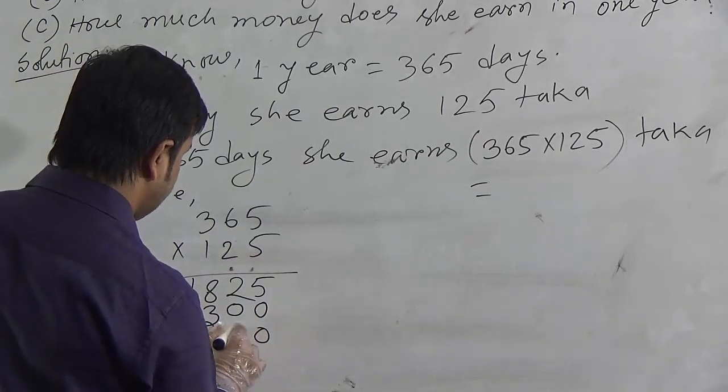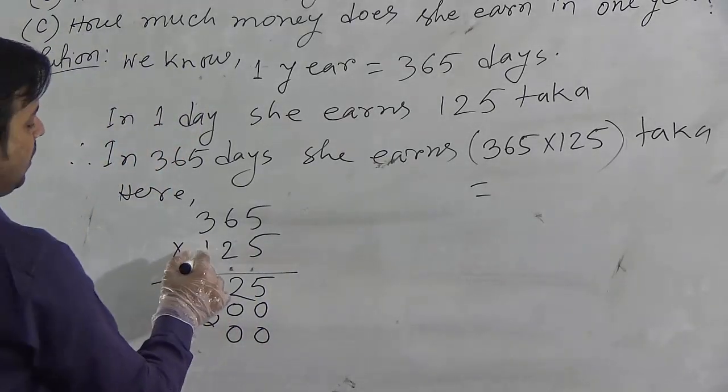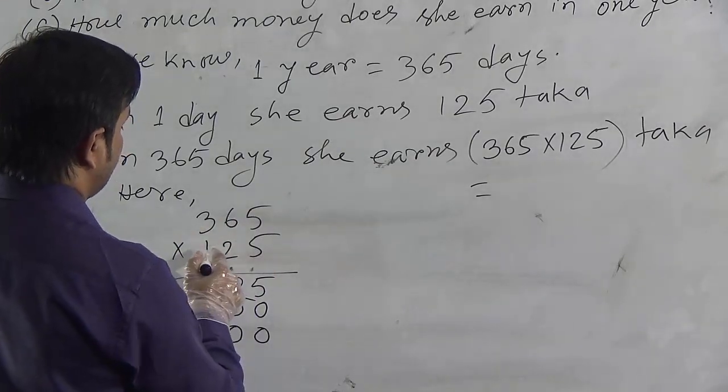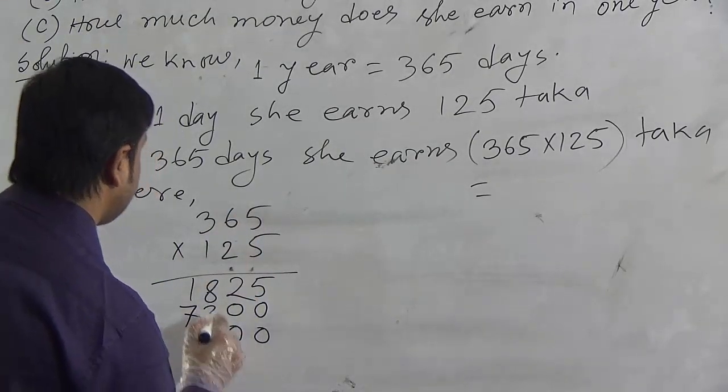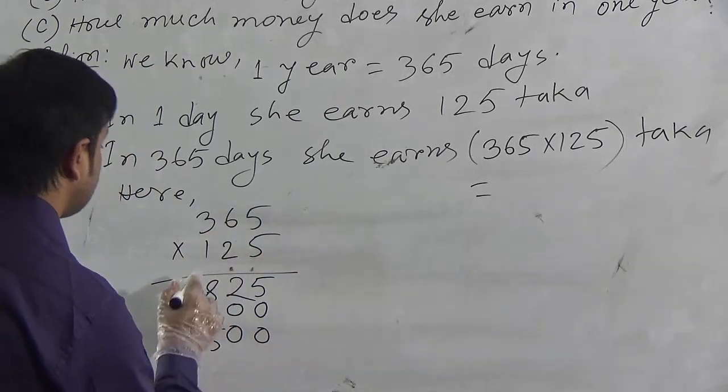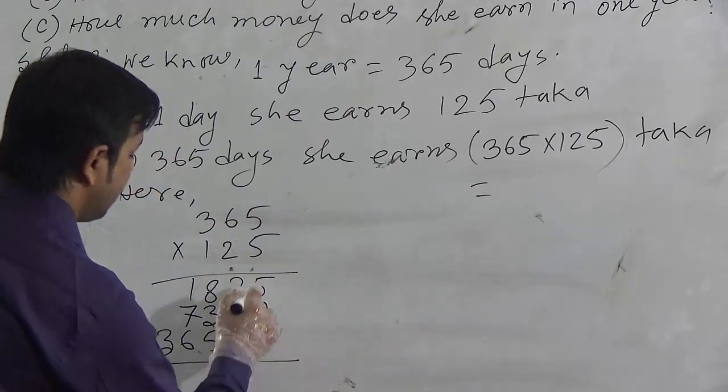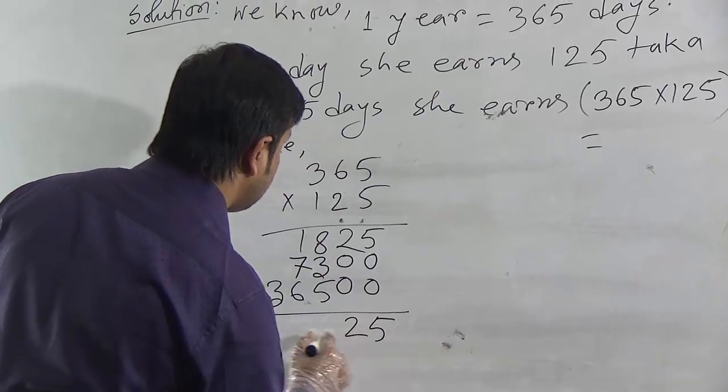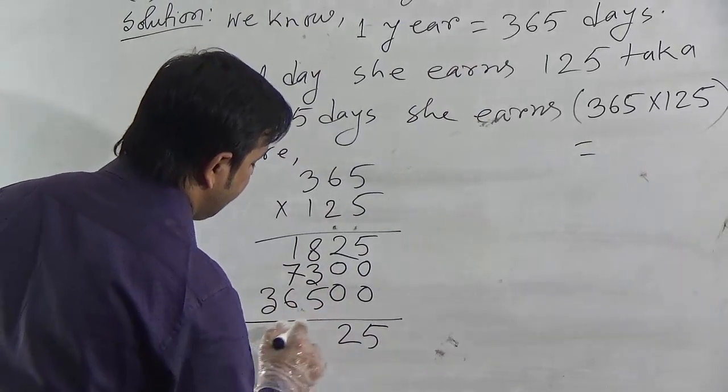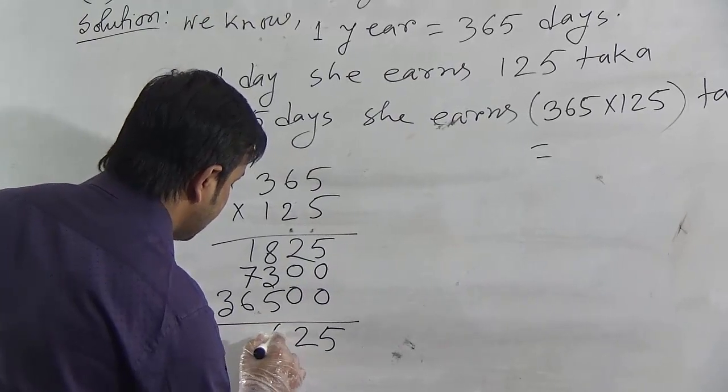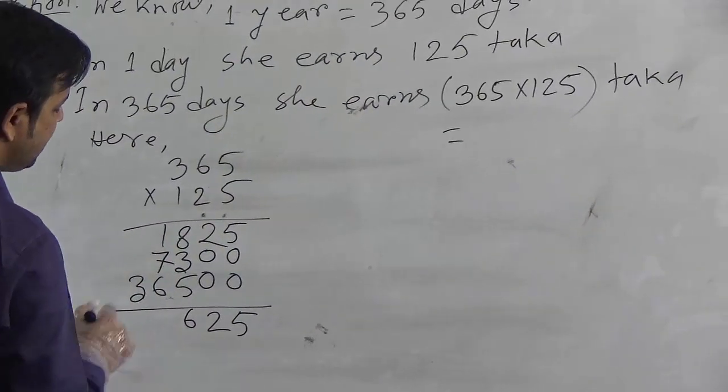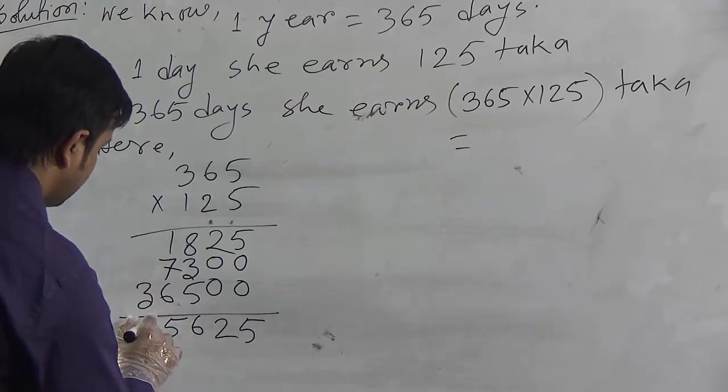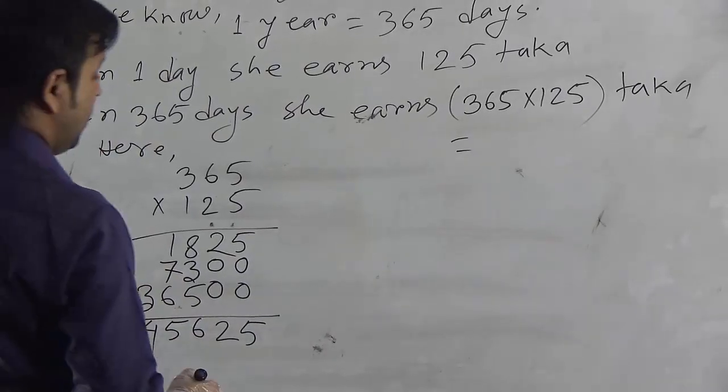Now, we have to multiply by hundreds place. If we multiply this number by 1, we will get 5 ones are 5, 6 ones are 6, 3 ones are 3. Now, we have to add this 3 numbers. If we add, we will get 5, 2, 8, 3, 11 and 5. So, 1 left, 4.